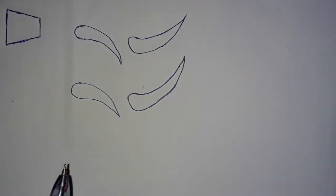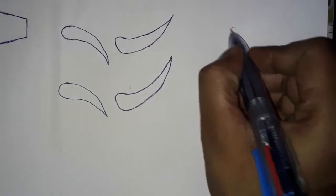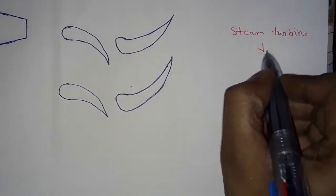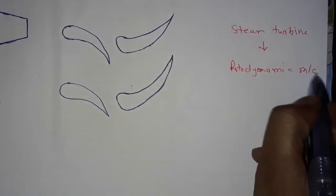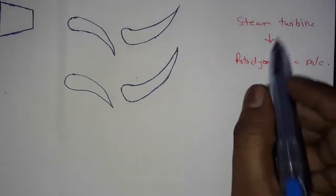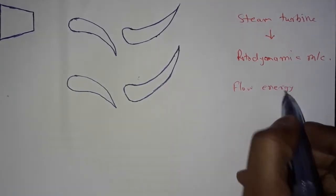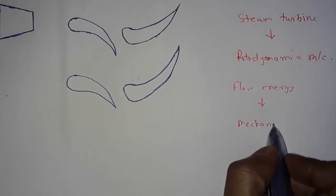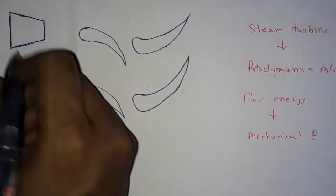Hello friends, welcome. In this video we will see the working principle of a steam turbine and force exerted on moving blades. A steam turbine is a rotodynamic machine because it converts flow energy of steam into mechanical energy by using a rotor. In this figure, this is a nozzle.